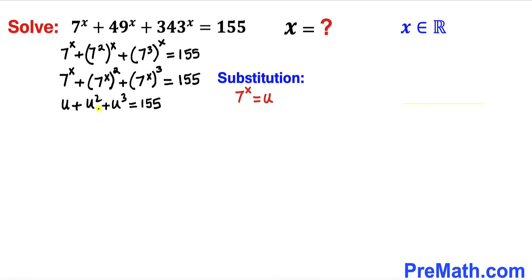Now let's go ahead and rearrange these in descending order: u power 3 plus u power 2 plus u, and let me move this 155 to the other side, equals to 0.